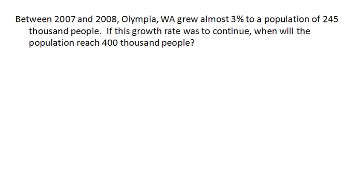So between 2007 and 2008, Olympia, Washington grew almost 3% to a population of 245,000. If this rate were to continue, when will the population reach 400,000?